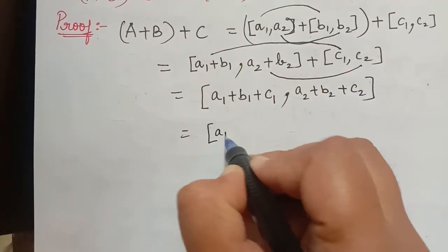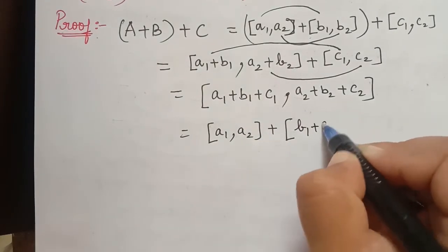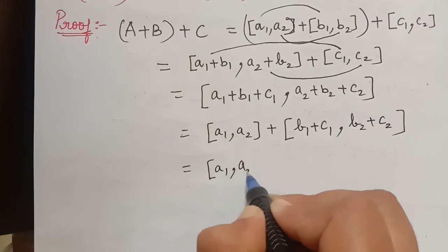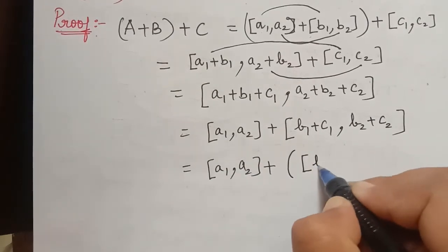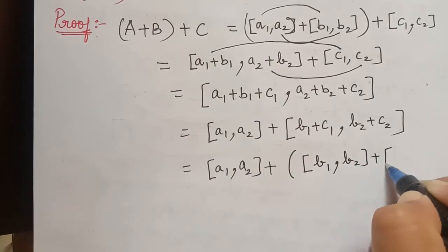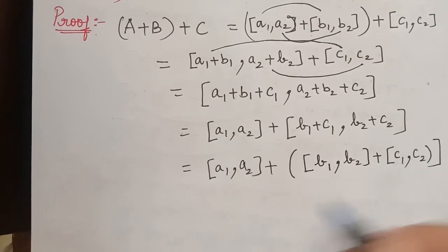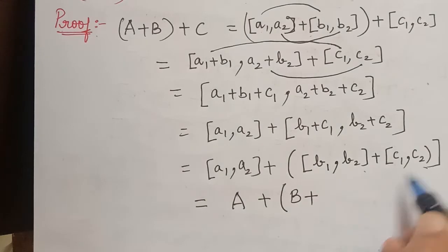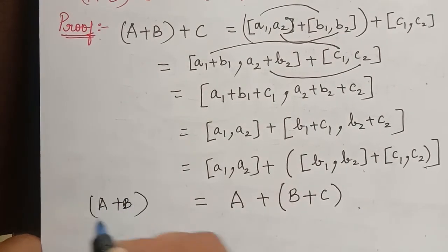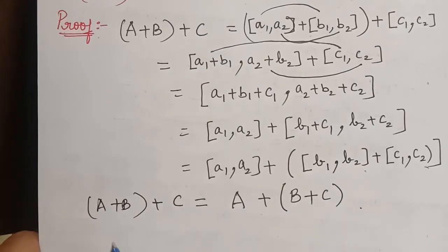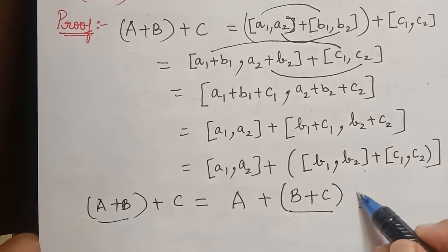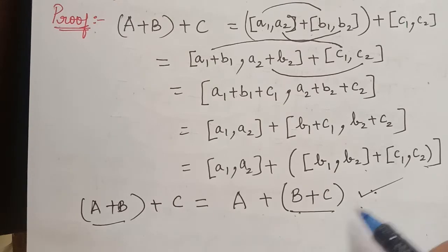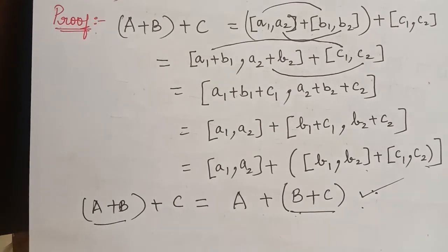We can write this as closed interval [a1 plus (b1 plus c1), a2 plus (b2 plus c2)], which equals A plus (B plus C). So we started with (A plus B) plus C and obtained A plus (B plus C) — the brackets have been interchanged. Hence we have proved that the arithmetic operation on closed intervals is additively associative.